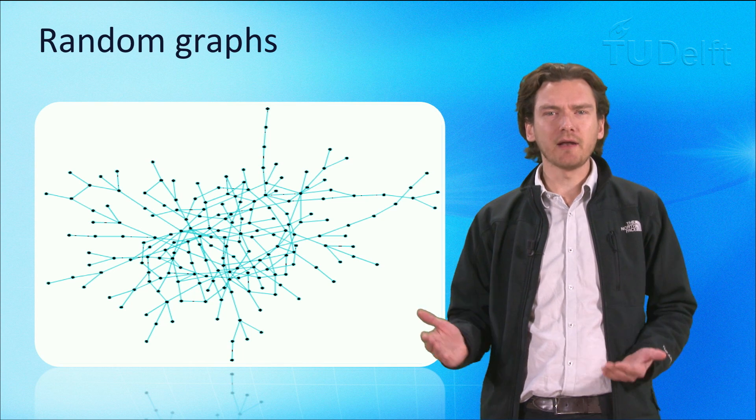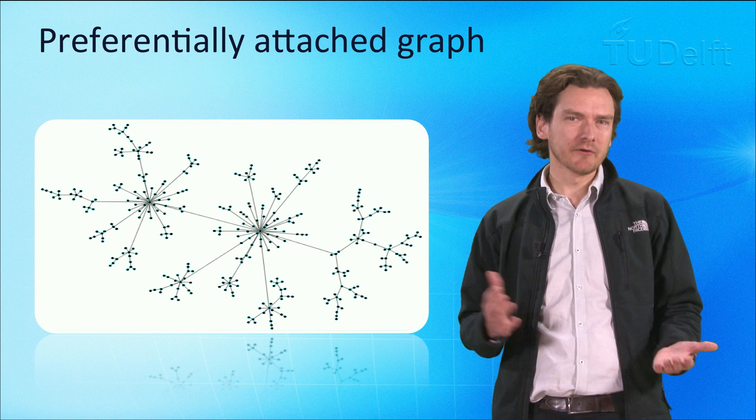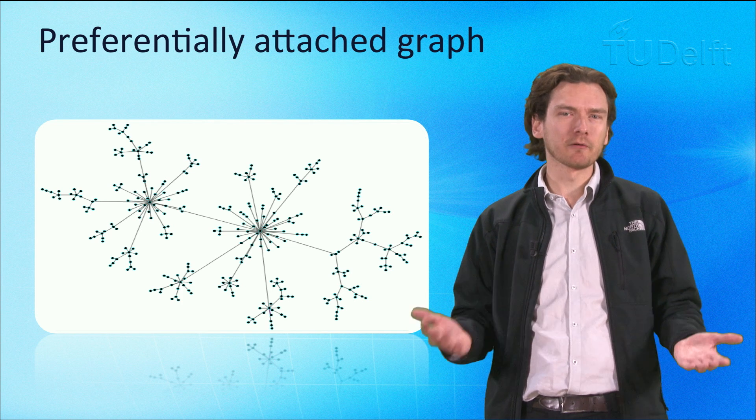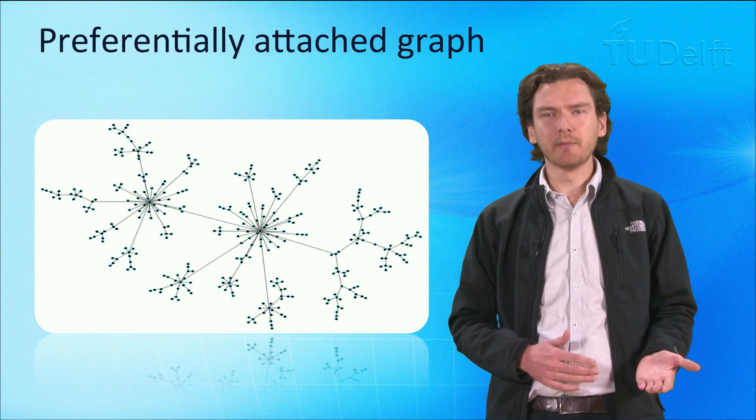Now with a preferentially attached graph, we have a different situation, where certain nodes are more popular than others, and nodes are more likely to be attached to them. A few nodes may have many edges, while most nodes only have a few edges.